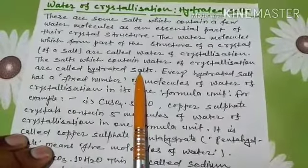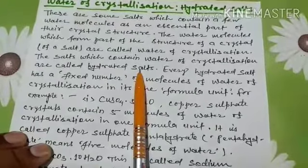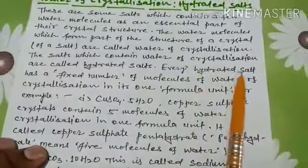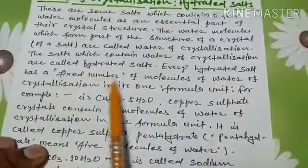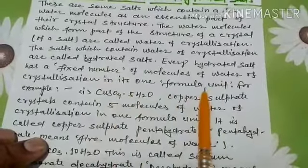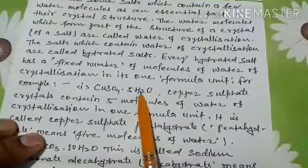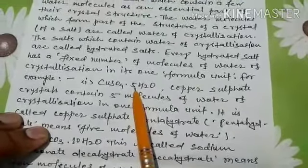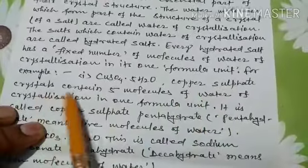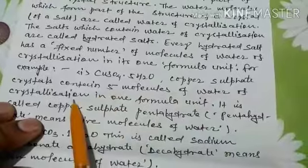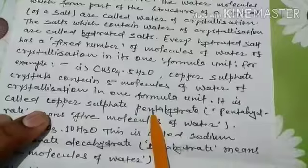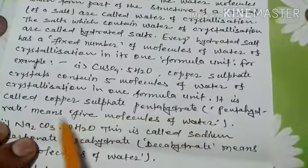Every hydrated salt has a fixed number of molecules of water of crystallization in its formula unit. For example, copper sulphate contains five molecules of water of crystallization. So copper sulphate crystals are also called copper sulphate pentahydrate — 'pentahydrate' meaning five molecules of water.